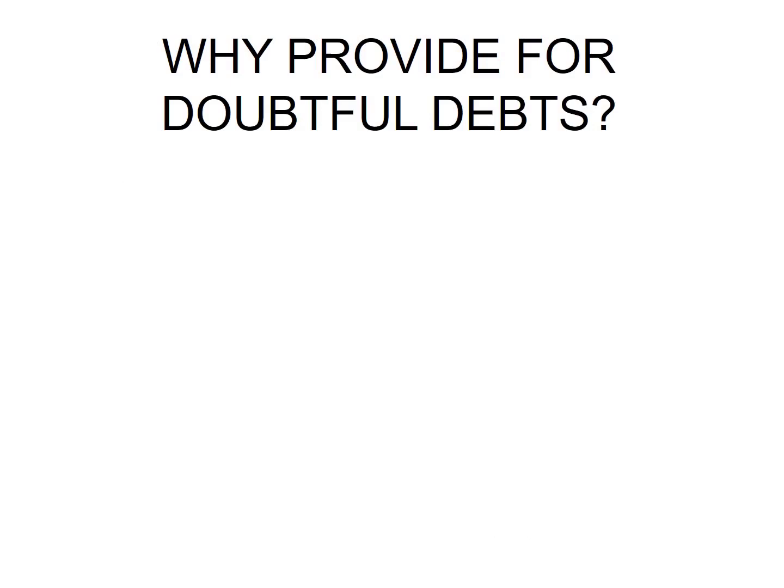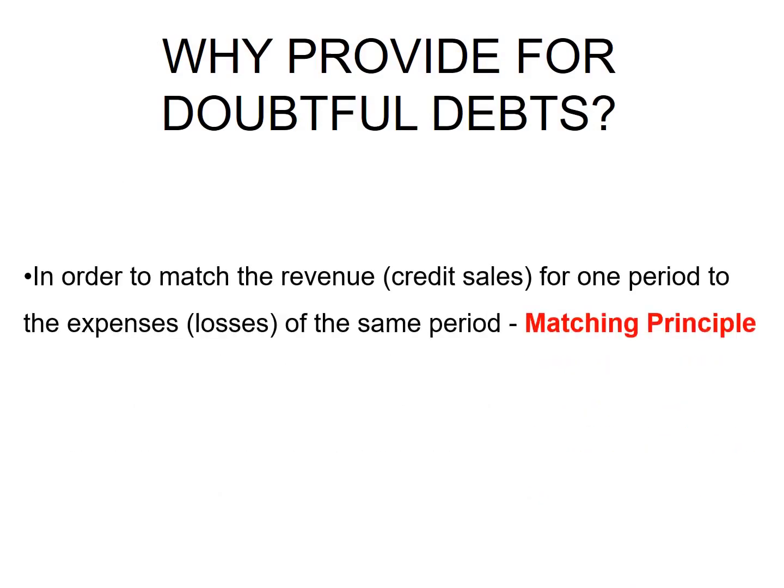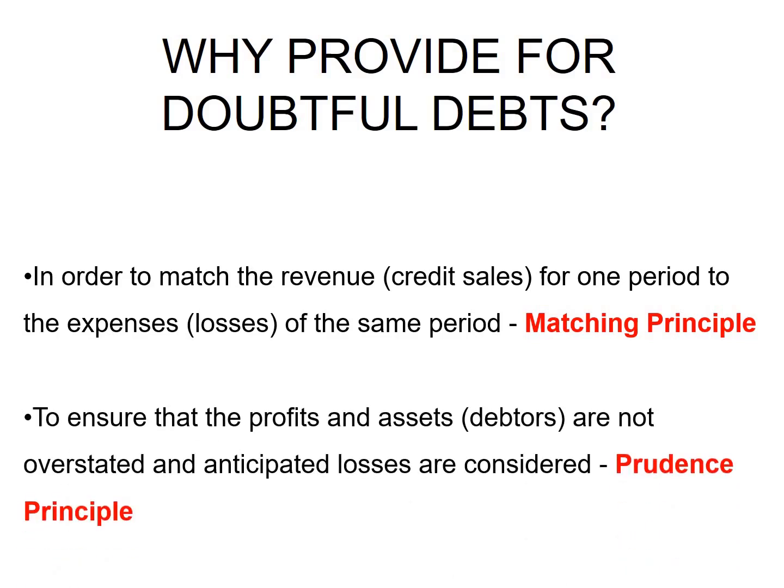Why would we provide for doubtful debts? In order to match the revenue for one period to the expenses of the same period — this is the matching principle. The revenue we're talking about is the credit sales from the debtor, and the expense will be the increase in provision for doubtful debts. Another reason is to ensure that all profits and assets are not overstated and anticipated losses are considered, which forms part of the prudence principle. If we do not provide for doubtful debts, we will be overstating our assets, which is in conflict with the prudence principle.